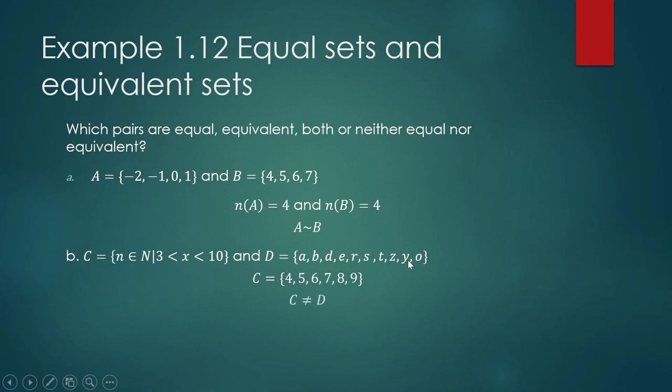Obviously they are not equal, and they are also not equivalent, because the cardinal number of C is 6 and the cardinal number of D is 10. C is not equivalent to D. So C and D are neither equal nor equivalent sets.